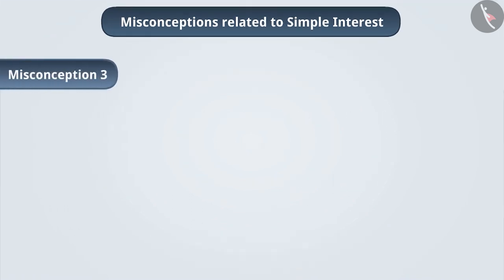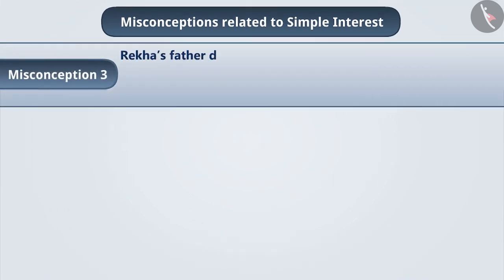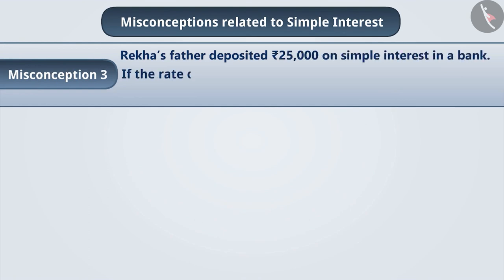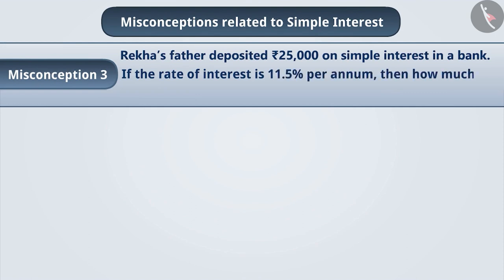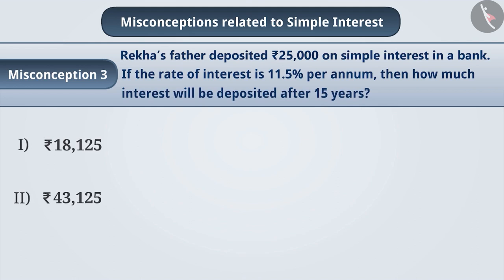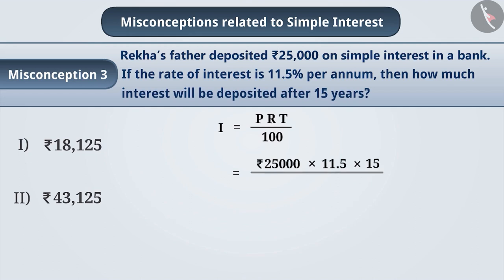Misconception 3. Rekha's father deposited Rs. 25,000 on simple interest in a bank. If the rate of interest is 11.5% per annum, then how much interest will be deposited after 15 years? Using the formula: I = PRT / 100 = 25000 × 11.5 × 15 / 100, which is equal to Rs. 43,125.